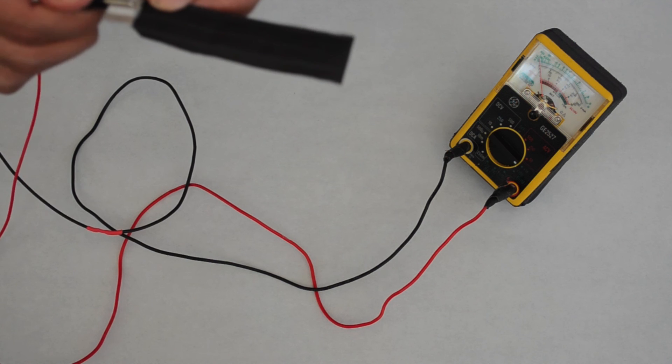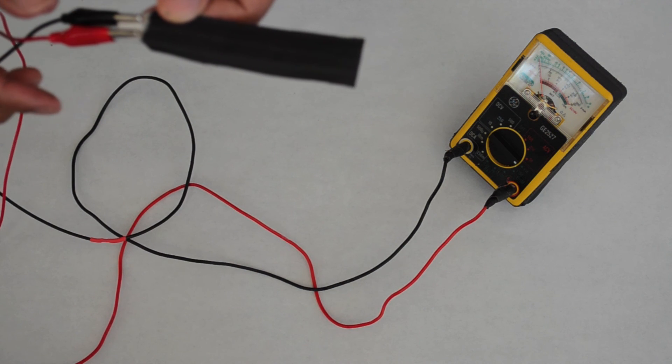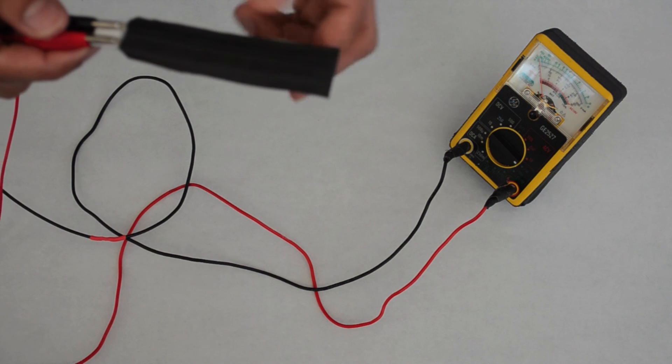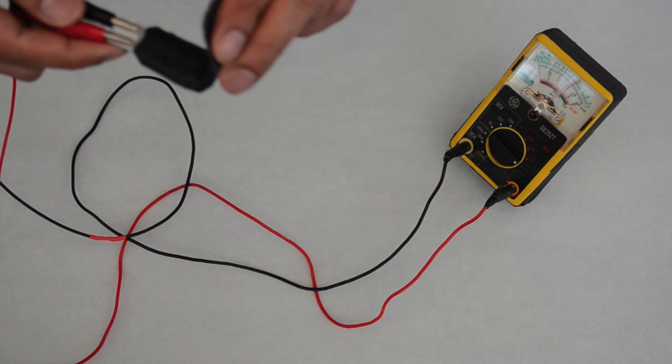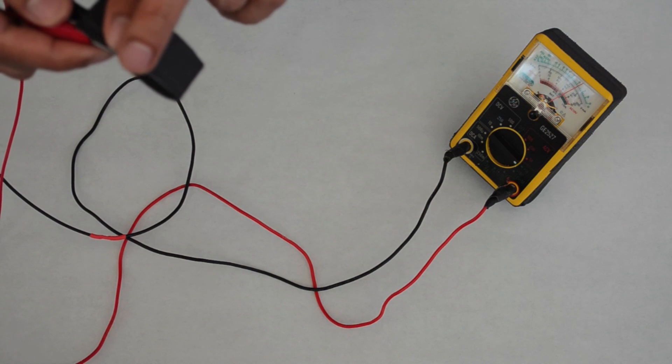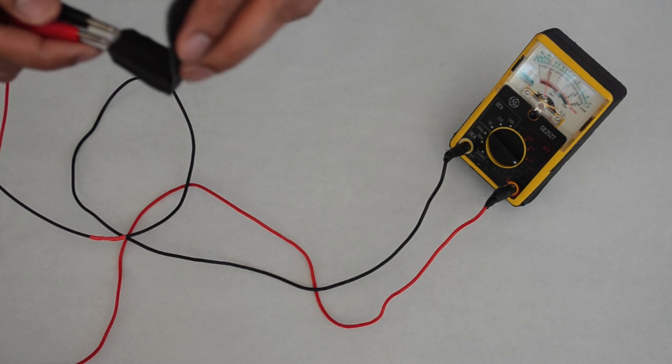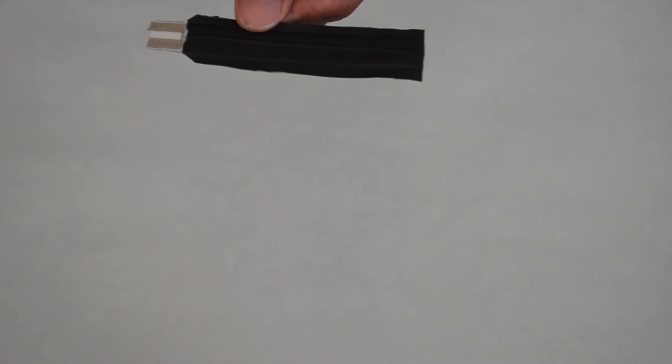You can now optionally test the sensor using a multimeter. It doesn't matter which wire, red or black, is on each of the golden conductive textile contacts. As you bend the sensor, the resistance changes. After some use, the sensor may not be as accurate as when you first made it.